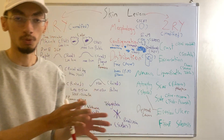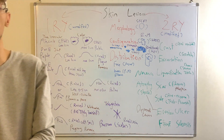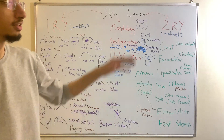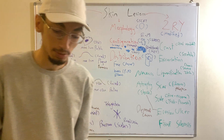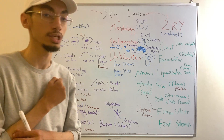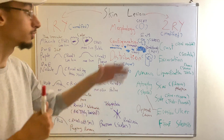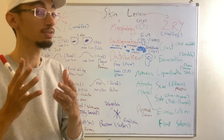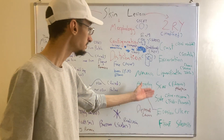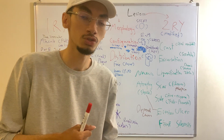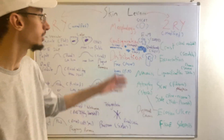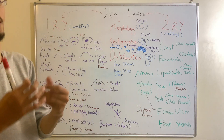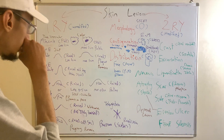Secondary skin lesions are those that had one form and were modified to another. For example, a crust did not come on its own — it was secondary to a ruptured vesicle. You may also have a scar as a secondary lesion, where an ulcer was healed by scarring. So in secondary lesions, the skin lesion was modified to another form, while primary lesions are unmodified.